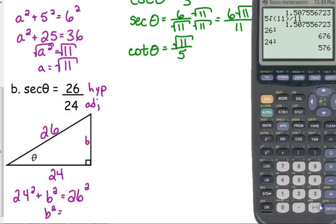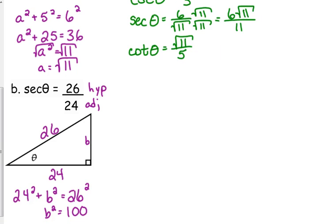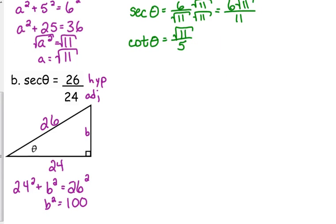26 squared is 676, 24 squared is 576, so that means b squared equals 100 when we subtract. So b equals 10. Opposite side equals 10. That's nice because now we don't have to deal with square roots, right.